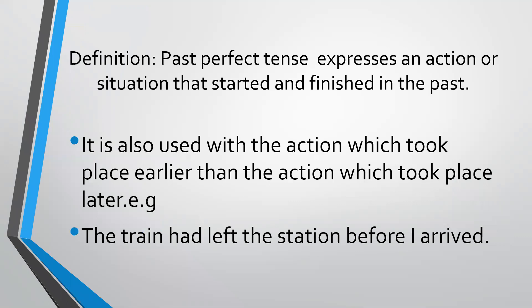The definition is: past perfect tense expresses the action or situation that started and finished in the past. It is also used with the action which took place earlier than the action which took place later.